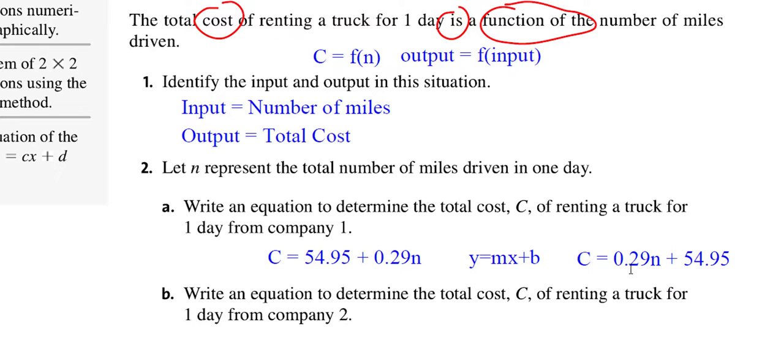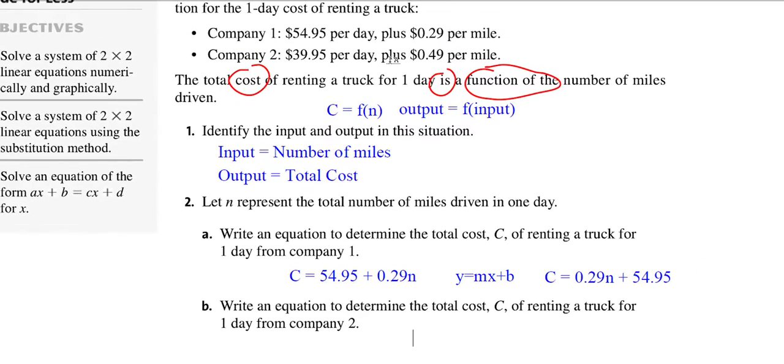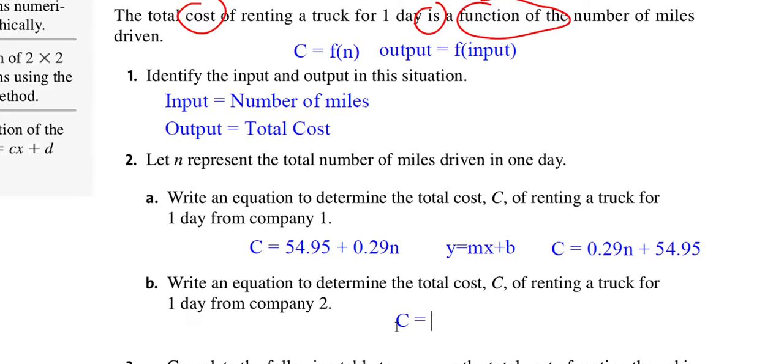So either of these would work for us. This equation is correct. This equation over here is correct. I just switched the order to make it look more like Y equals MX plus B. So now we can quickly say, oh, the slope is the 0.29 and the B or the Y-intercept is the 54.95. And for the second equation, it looks like it's 39.95 a day plus 49 cents per mile. So C would equal, and I'm going to write it in the proper order, 0.49 times N plus 39.95. And again, the order doesn't matter here, as long as the N is attached to that 49 cents. So our slope here is 49 cents and the slope here is 29 cents. If we were to graph both of these, I would expect this to be a steeper line because my slope is bigger.